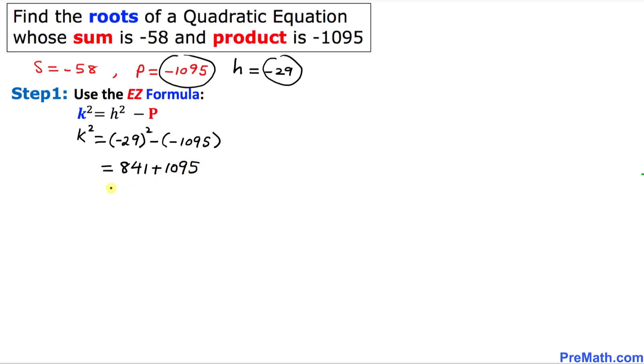Let's add them together. That is going to give us 1936. So our K² turns out to be this, and we want to solve for K.